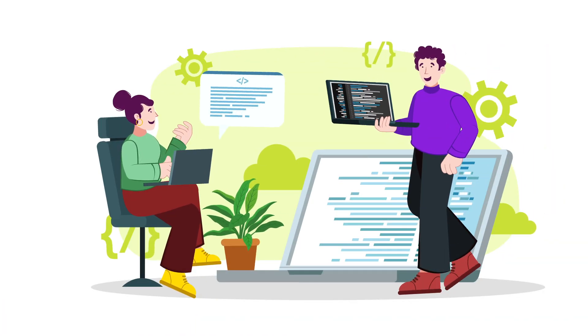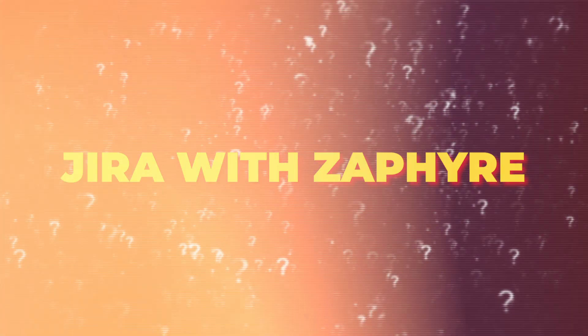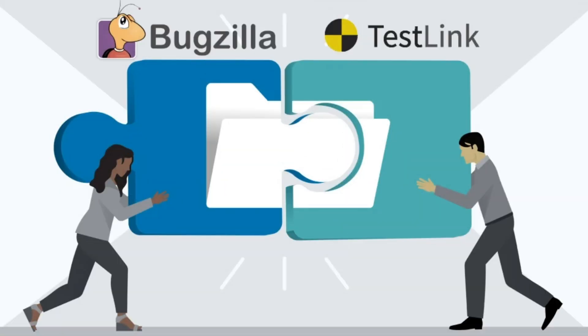You will mention the different levels — for example, unit, integration, and system. Not only that, you will mention if you are going to do only functional testing or non-functional also, where you are going to do performance testing, security, load, compatibility, and any other approach. Which tool you are going to use — for example, are you going to use Jira with Zephyr (Zephyr is a test management tool), or Bugzilla with TestLink, or any open source tool — all these you need to mention here.